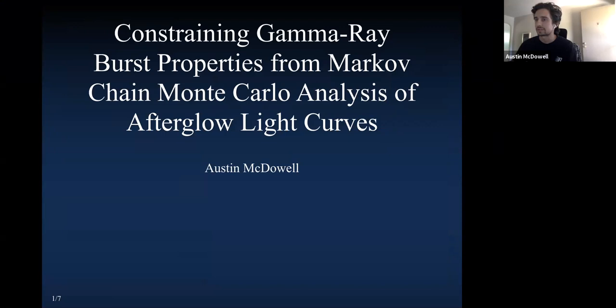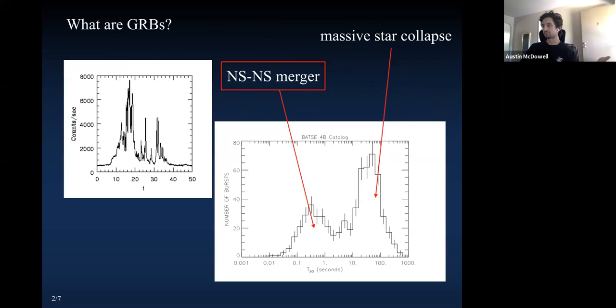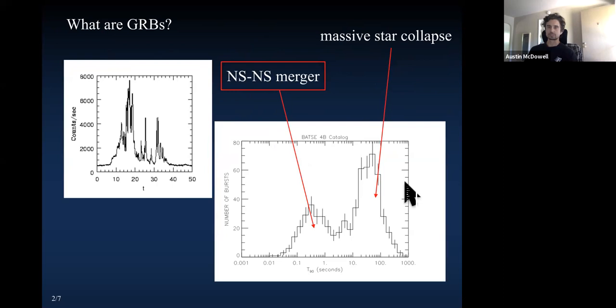Hi everyone, my name is Austin McDowell. I'm a fifth year working in Andrew McFadyen's group. Also in the group are Chris TD and Marcus Dupont, who are working on something different. I'm going to talk briefly about what I do. So first of all, what's a gamma ray burst? Like the name suggests, it's a burst of gamma ray photons in a short amount of time. They come in two lengths: short bursts lasting around two seconds, and long bursts lasting around ten seconds.